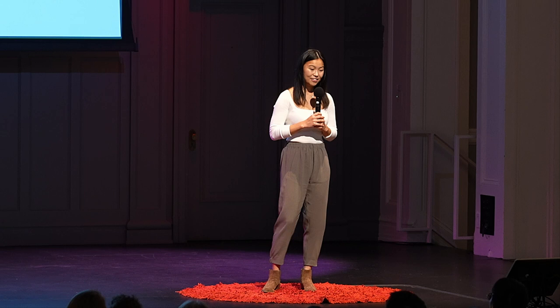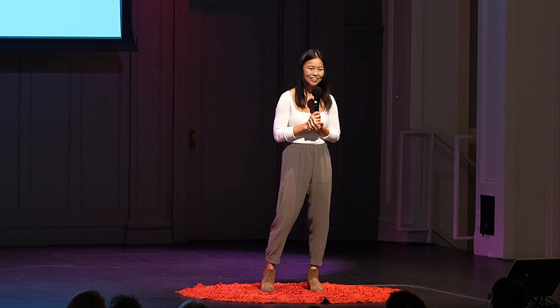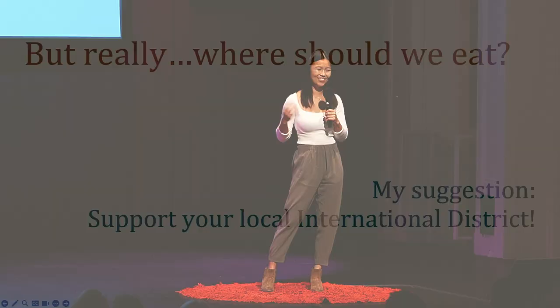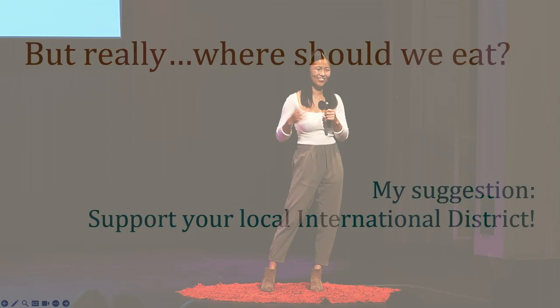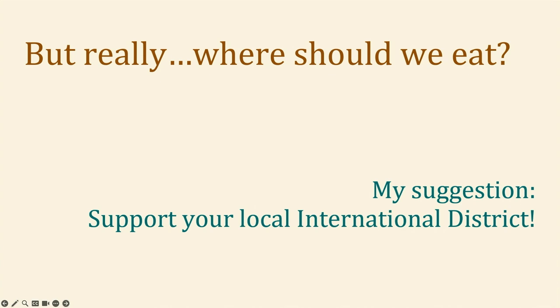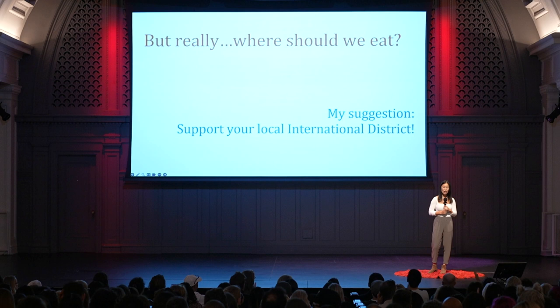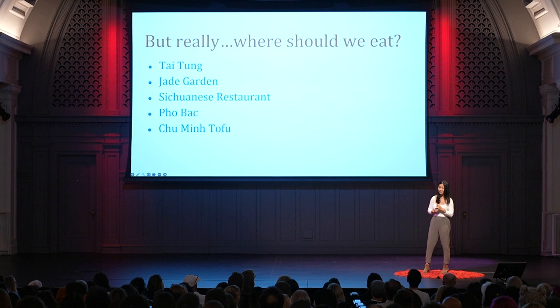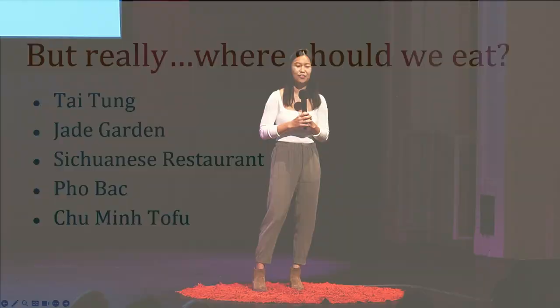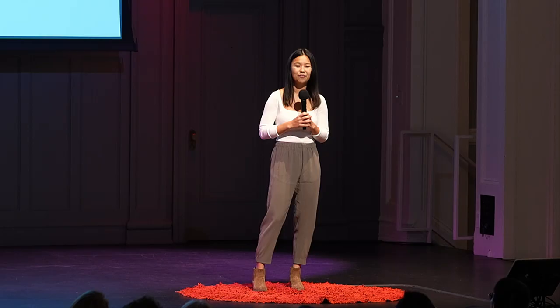You might be wondering, 'We still haven't answered where should we eat?' My suggestion is to support your local international district. The international district right now is a historically endangered landmark, so I'd really appreciate that support. It also has a variety of food options you can see on the slide above. And the last thing I want you to take away is that when you're deciding on a restaurant, you'll probably win some, lose some — but there's always dim sum. Thank you.